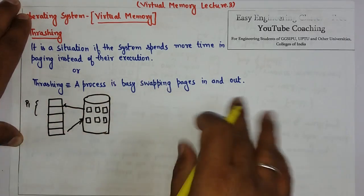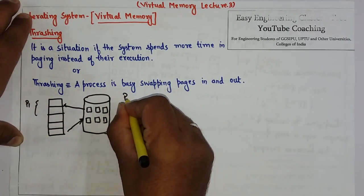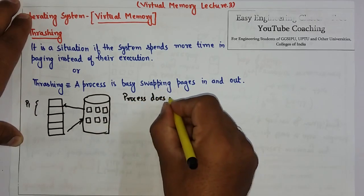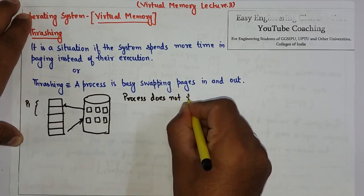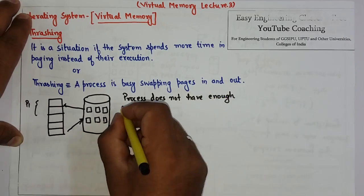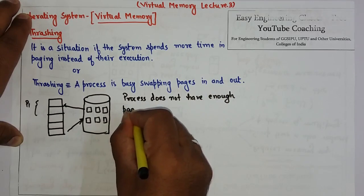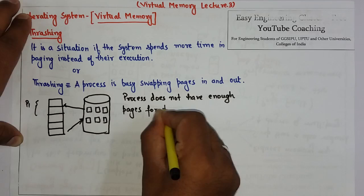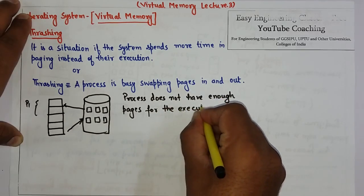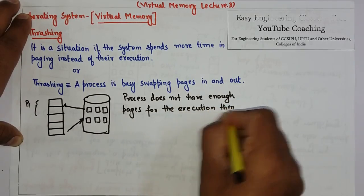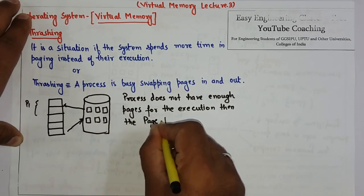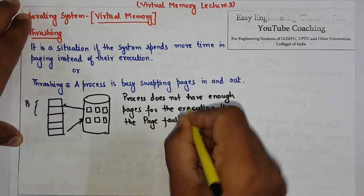If a process does not have enough pages for the execution, then the page fault will occur. And that page fault will be high.